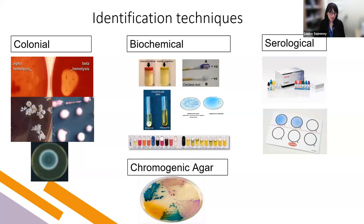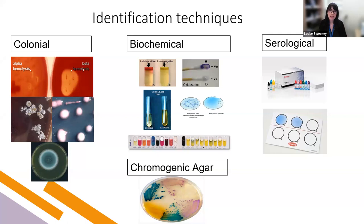Biochemical tests work on the basis of knowing what enzymes bacteria produce, and can be used to quickly and easily identify an organism. For example, if you've got a mucoid-looking colony on a urine culture plate, the most common gram-negative organism would be E. coli. A very simple test would be the indole test, because E. coli is indole-positive, whereas other coliforms like Klebsiella are not. For staphylococci, Staphylococcus aureus produces coagulase, while other less pathogenic staphylococci like Staphylococcus epidermidis do not. So a simple coagulase test can differentiate Staphylococcus aureus from other staphylococci.